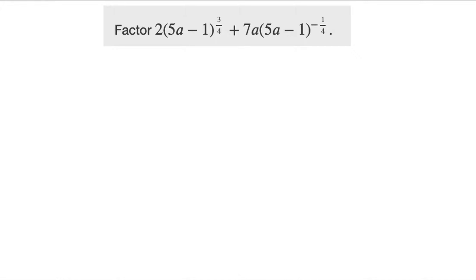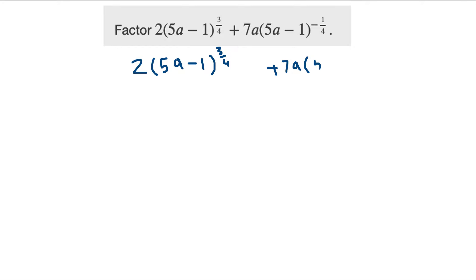So now let's try and factorize this one. Writing out the first term: 2 times (5a minus 1) in exponent 3 over 4, plus 7a times (5a minus 1) in exponent minus 1 over 4. This is not a polynomial because we have a fractional exponent — it is a radical, so it is not a polynomial.